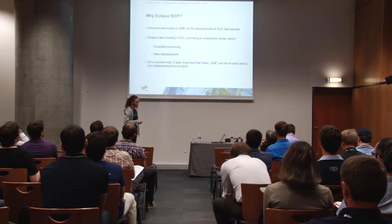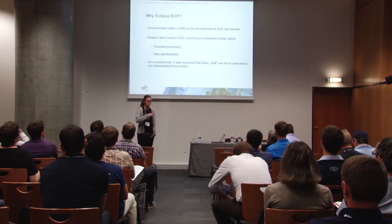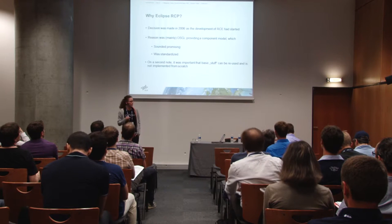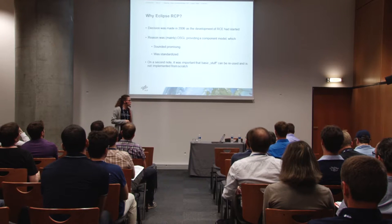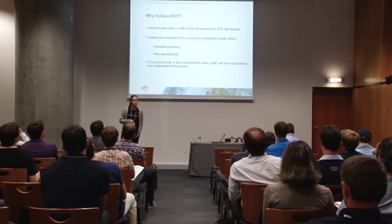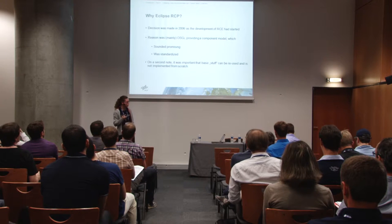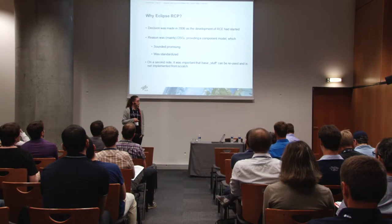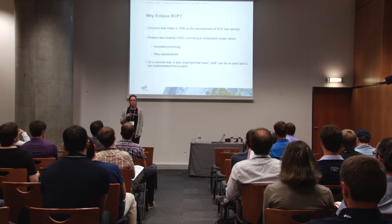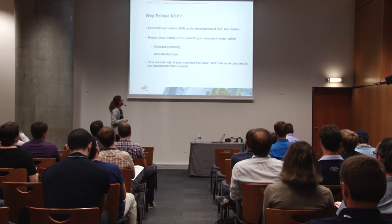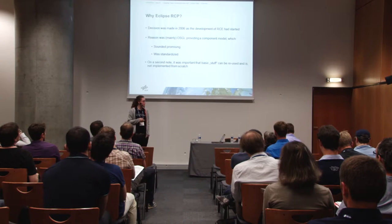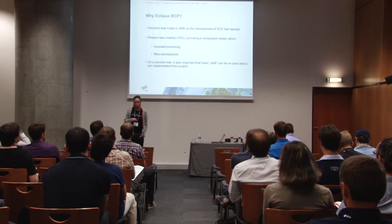There was already a decision about why specific technologies were chosen. For me the question was: why Eclipse RCP? Because I was not on the team at the start of RCE, I asked my boss why we chose Eclipse RCP in 2006. He said mainly because of OSGi, because OSGi provides a component model and it sounded promising — it was standardized. On a second note, he mentioned that it was important that basic stuff could be reused, meaning the Eclipse RCP approach, so we didn't need to implement everything from scratch.